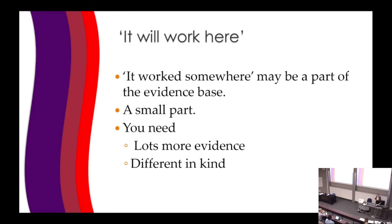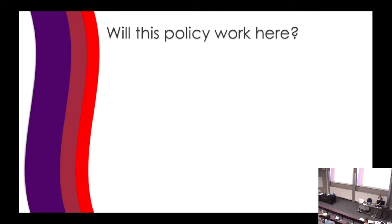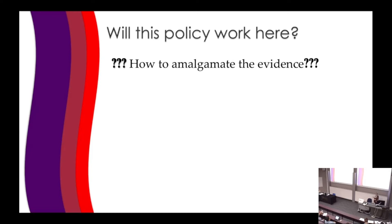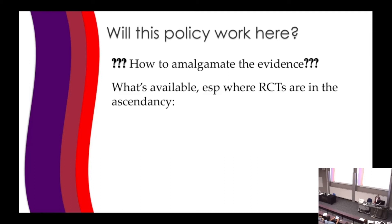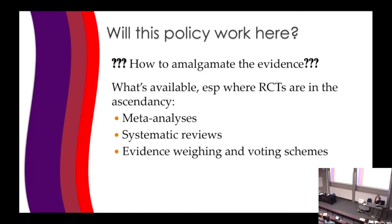You need lots more evidence, and it has to be very different in kind from just the evidence that it works somewhere. You need different methods for amalgamating this evidence. Will this policy work here? I want to talk about how to amalgamate the evidence, because that brings us back to what kinds of evidence one needs in the first place. What's most readily available for amalgamating evidence, especially where RCTs are in the ascendancy, is meta-analyses, systematic reviews, and various evidence weighting and voting schemes.